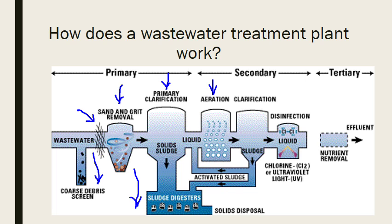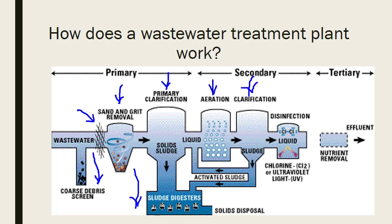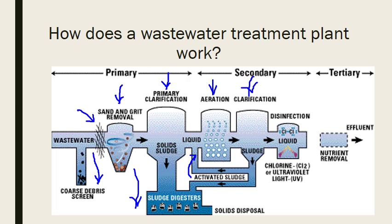Those parts are removed in the secondary clarification tank, where the sludge settles out and goes into pipes. Sometimes that sludge is cycled back into the system to encourage more breakdown in the aeration tank — this is called activated sludge. In wastewater treatment, sludge is any solid material that needs to be taken away.